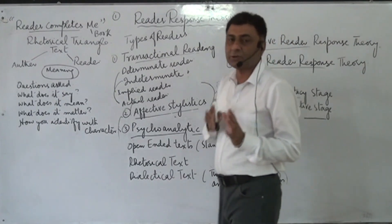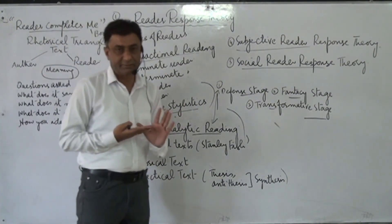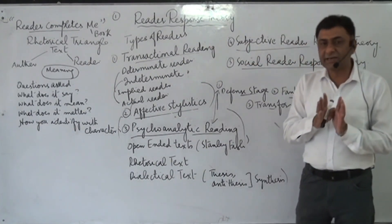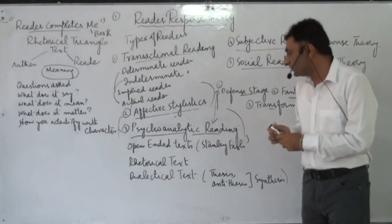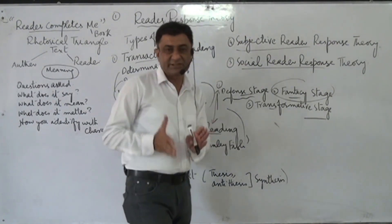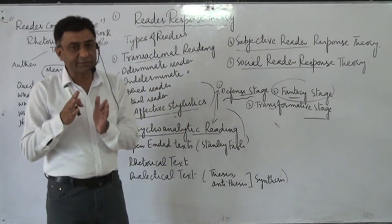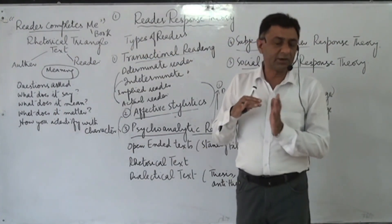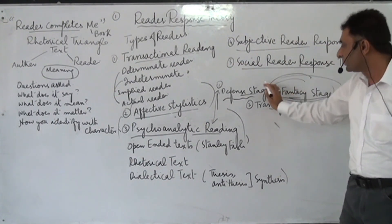Psychoanalytic reading has three stages. The first is the defense stage — after going through a piece of literature, the reader faces different questions raised by the book: dilemmas, ambiguous situations that need to be clarified. The second is the fantasy stage — the reader imagines and fantasizes, thinking that something may be related to political, social, cultural, economic, or religious issues, and through this provides solutions to the dilemmas raised in the defense stage.